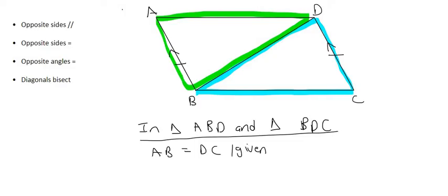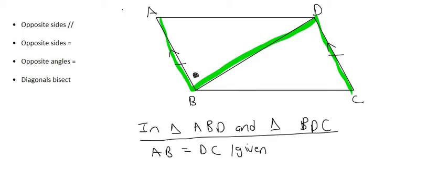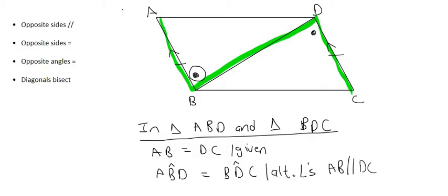Now we know that AB and DC are also parallel. Can you see the following Z? For that reason, this angle here is the same as that angle over there. That angle ABD with a little arrow on top of the B is the same as BDC with a little arrow on top of the D. The reason is alternating angles, because AB is parallel to DC.